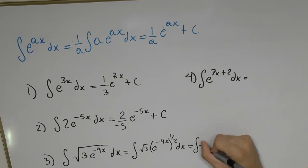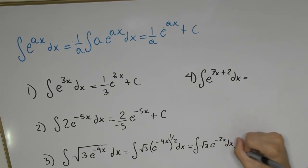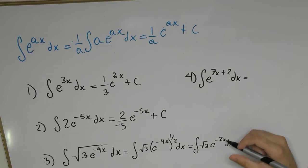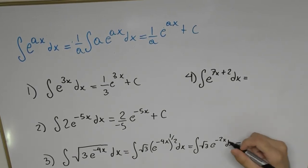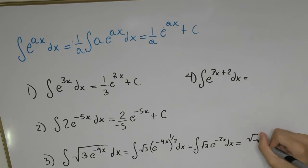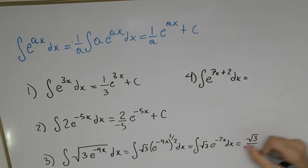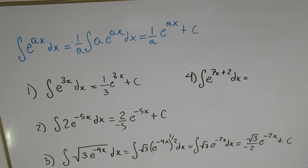We rewrite this integral as √3 · e^(-2x) dx, and then integrate in the regular manner: √3 divided by minus 2, times e^(-2x) plus the constant c. That's the integral.